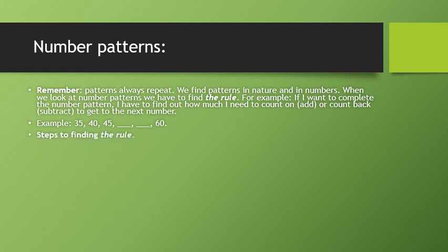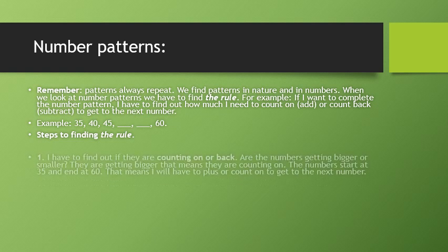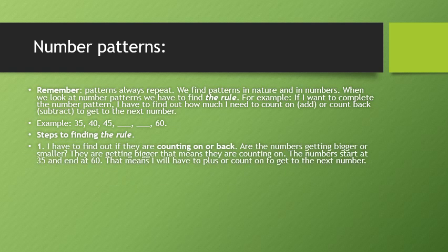Steps to finding the rule. Step 1: I have to find out if they are counting on or back. Are the numbers getting bigger or smaller? They are getting bigger. That means they are counting on. The numbers start at 35 and end at 60, so I'll have to plus or count on to get to the next number.